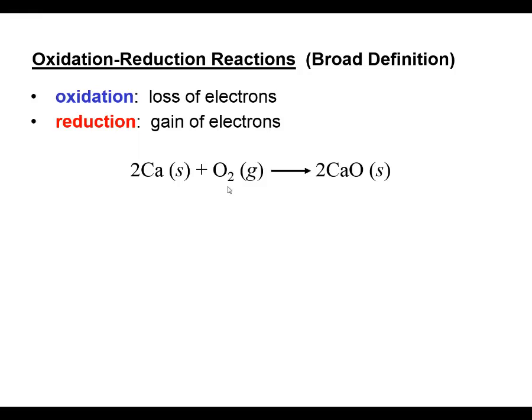If I have an atom that is not part of a chemical compound and not combined with other elements, then we would assign the oxidation state as a zero. These neutral elements have no charge, and their oxidation numbers are defined as zero, even though oxidation number can be different than charge.